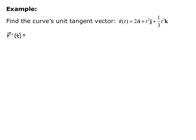So we take the derivative component-wise, so we have 2i, because the derivative of 2t was just 2, plus 2tj plus t squared k. So I took the derivative of the i, j, and k components.